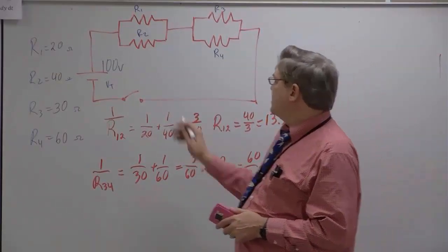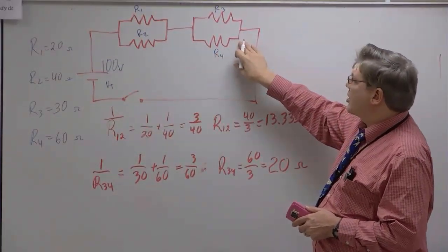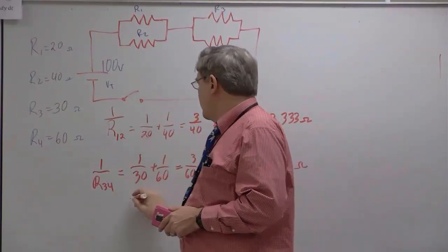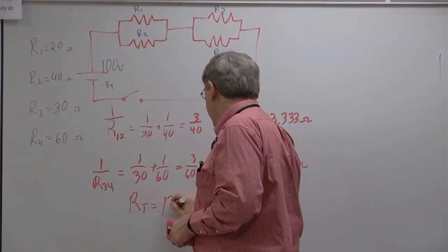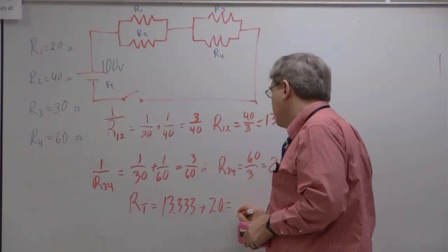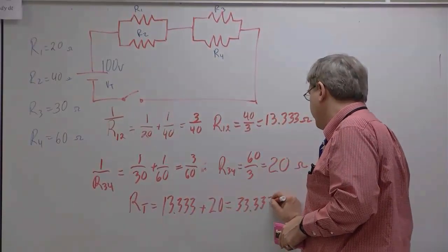So that means I've got a 13 ohm and a 20 ohm circuit or resistor in this circuit in series with each other. So RT is going to be equal to my 13.333 plus 20, which is equal to 33.333 ohms.